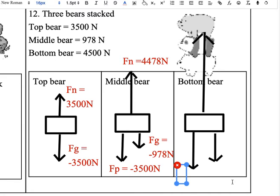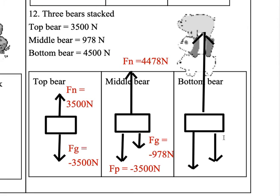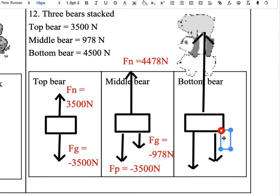Okay so let's start with gravity. Bottom bear weighs 4500, so Fg equals negative 4500.